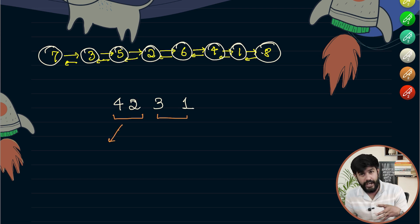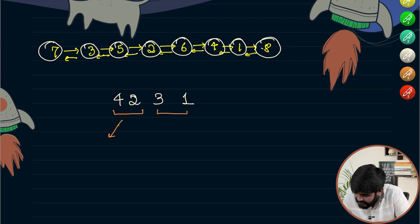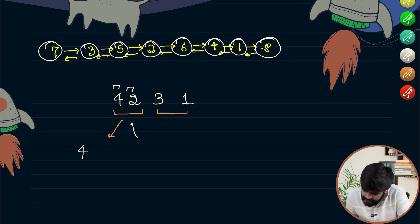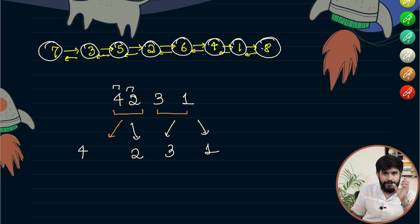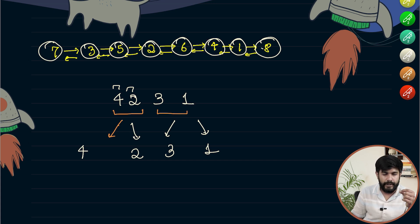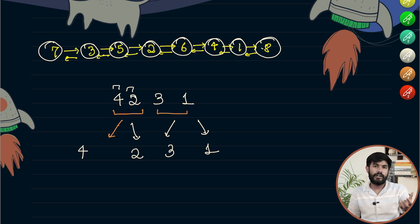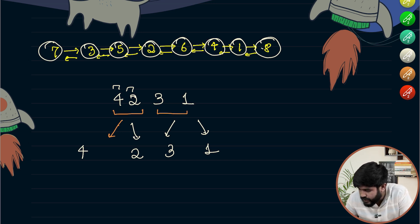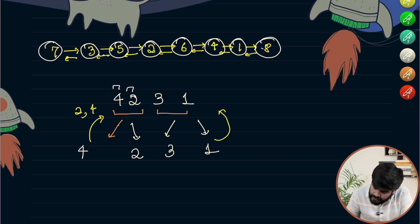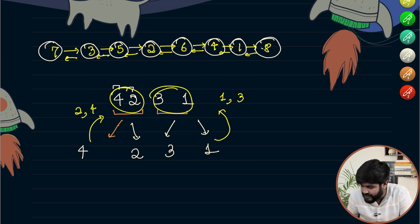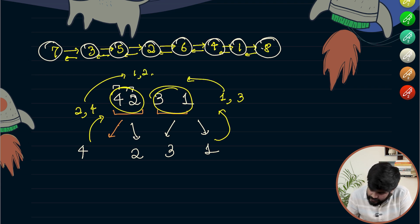Then 4 and 2 would be further divided into 4 and 2 individually. The same goes for 3 and 1 — 3 and 1 become individual elements. Now if you observe, in the end we have a single element. A single element is always a sorted element and we use this property. So now when we join the bits again, we join them in a sorted manner — 4 and 2 becomes 2 and 4, and 3 and 1 becomes 1 and 3. Now 2,4 and 1,3 join as 1, 2, 3, 4.